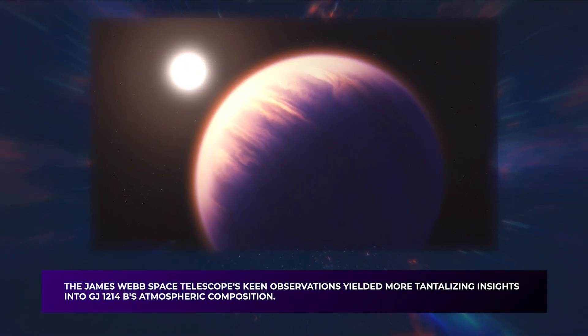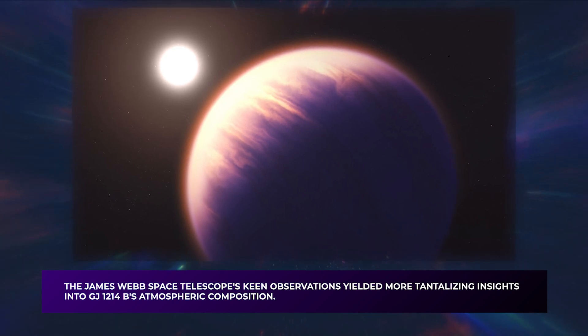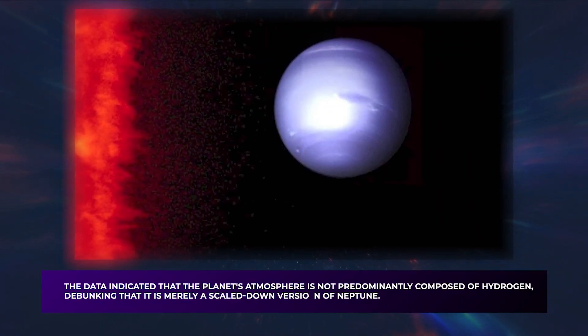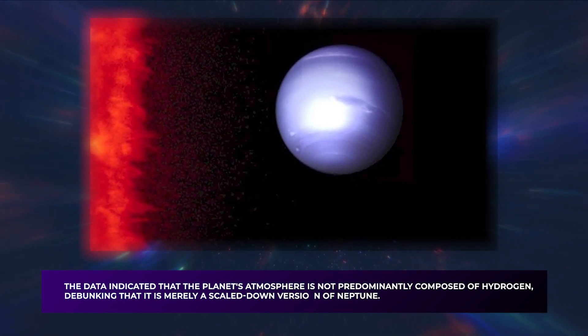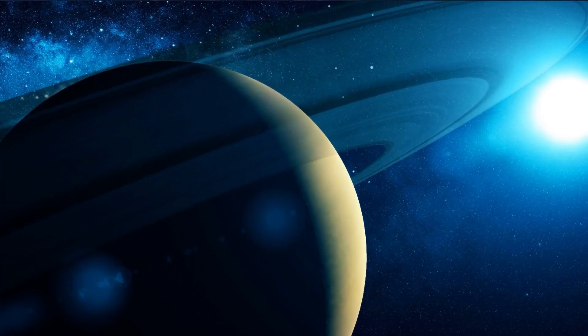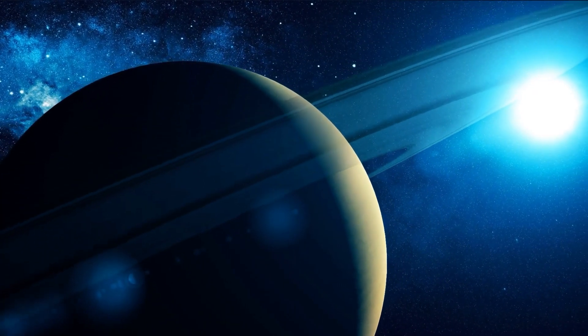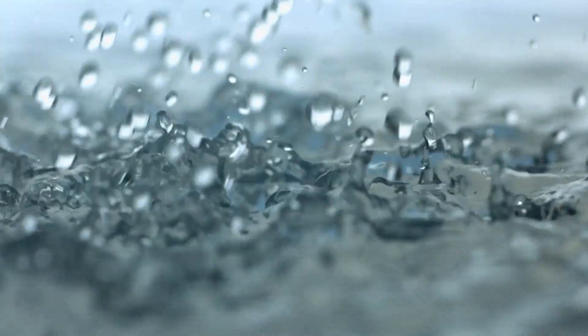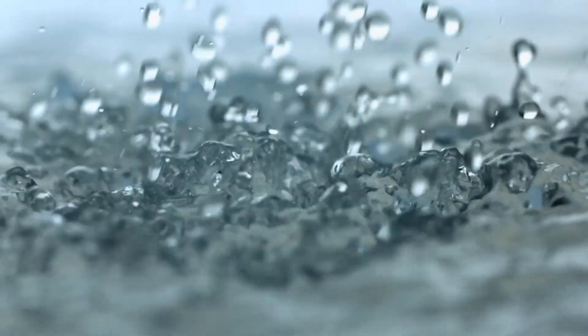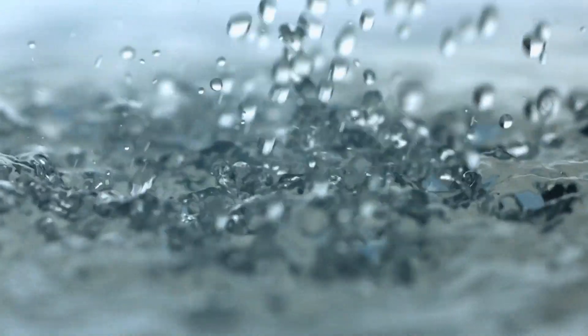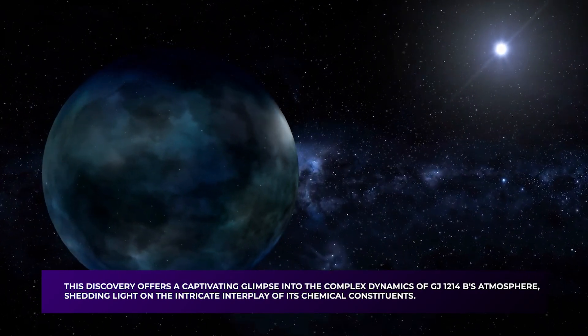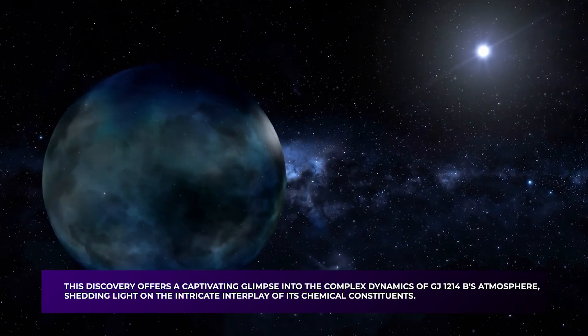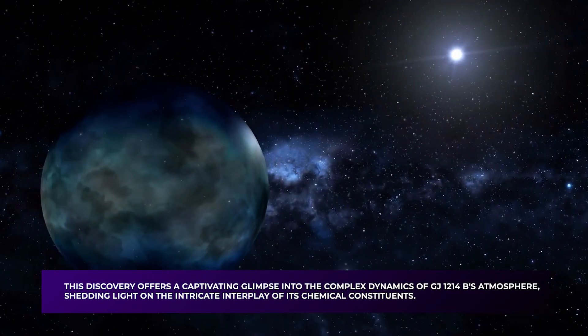The James Webb Space Telescope's keen observations yielded more tantalizing insights into GJ-1214b's atmospheric composition. The data indicated that the planet's atmosphere is not predominantly composed of hydrogen, debunking that it is merely a scaled-down version of Neptune. Instead, the presence of water vapor and methane emerges as compelling signatures. Eliza Kempton affirms the presence of water on the planet, despite its inhospitable conditions that prevent water from existing as a liquid. This discovery offers a captivating glimpse into the complex dynamics of GJ-1214b's atmosphere, shedding light on the intricate interplay of its chemical constituents.